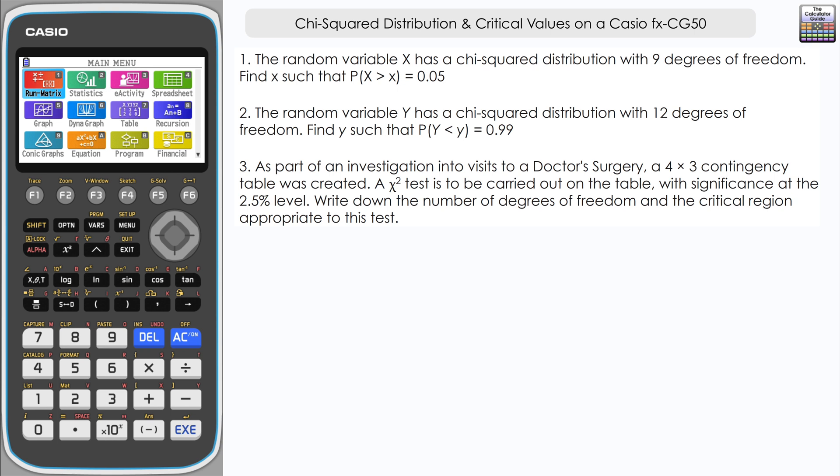We have three different questions here, but they're all going to be using the same feature, so three different ways in which you might use this particular feature. Let's take a look at question one. The random variable X has a chi-squared distribution with 9 degrees of freedom. Find X such that the probability of X being greater than X equals 0.05.